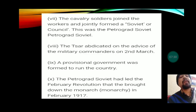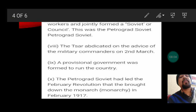Tsar Nicholas abdicated on the advice of his military commanders on 2nd March. As soldiers and workers came together, it was a threat alarm for the Tsar. On the advice of his military commanders, he finally abdicated and moved away from Russia. In his absence, a provisional government was formed to run the country, consisting of members of the Duma, workers, and soldiers.